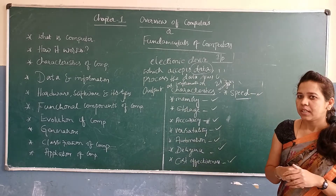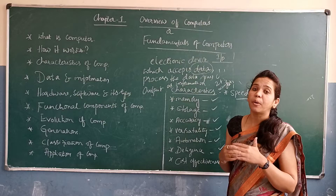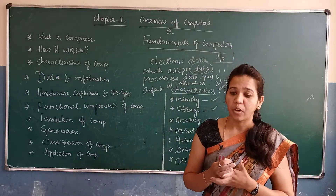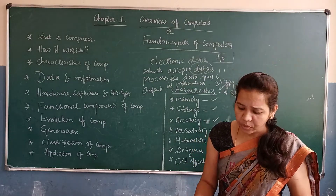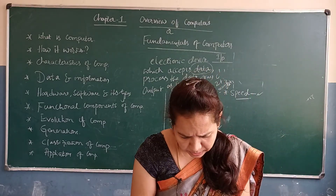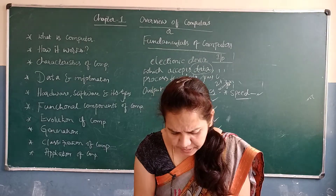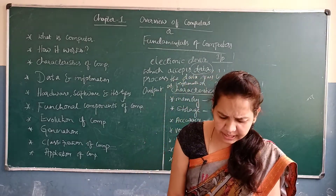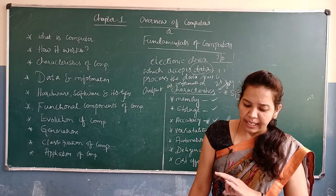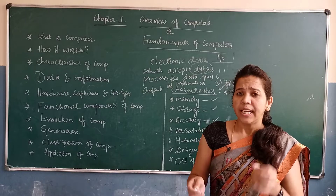First characteristic is speed. A computer is very fast. It works in terms of seconds, milliseconds, microseconds, and nanoseconds.